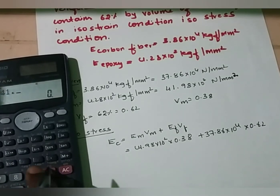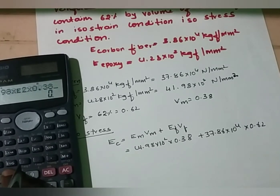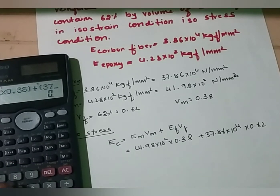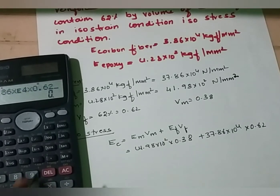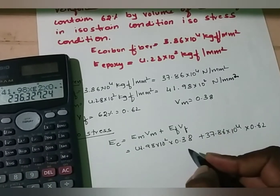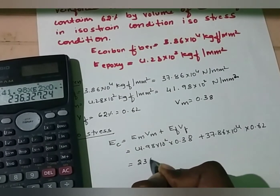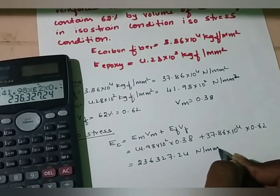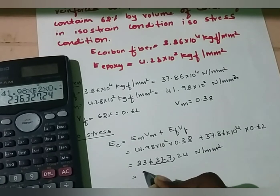Calculating: 41.98 × 10² × 0.38 + 37.86 × 10⁴ × 0.62. We get 23,627.24 N/mm², or 23.63 × 10⁴ N/mm².